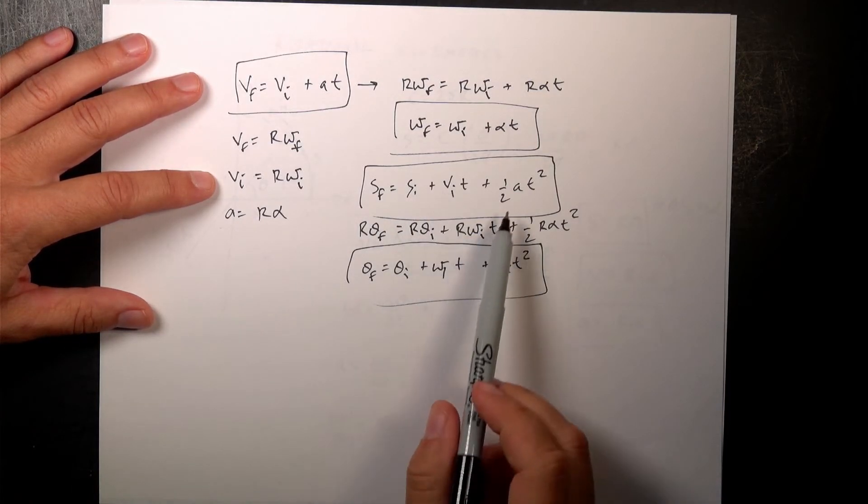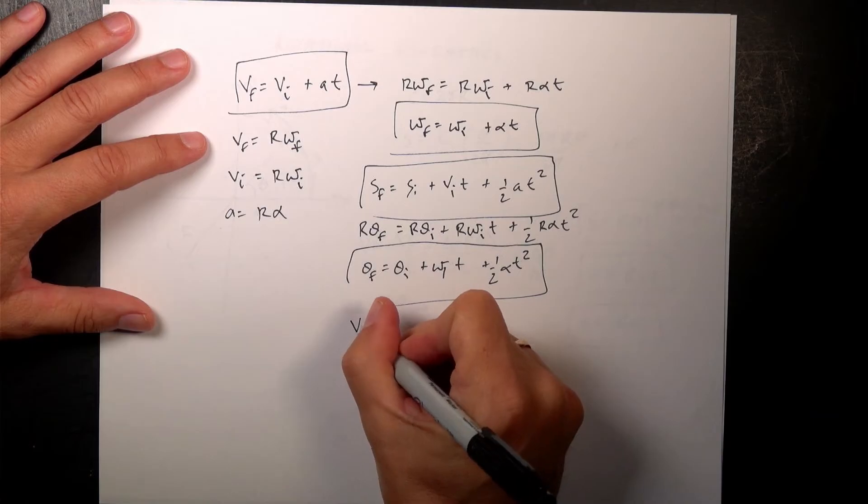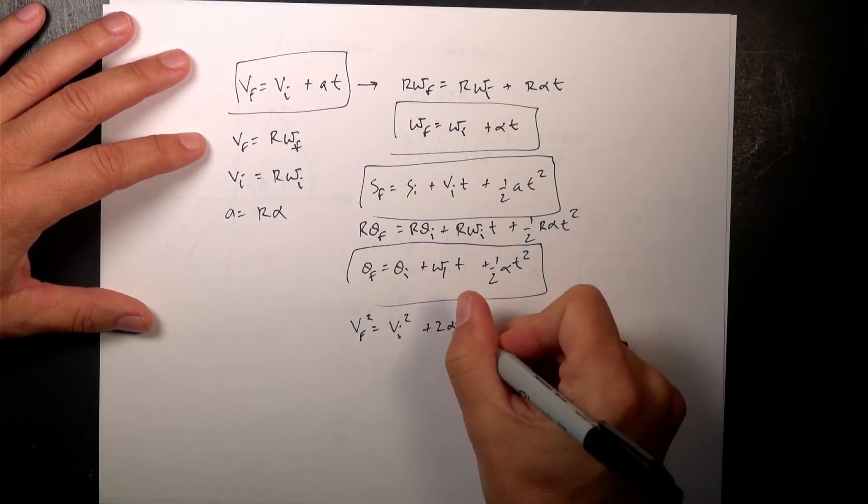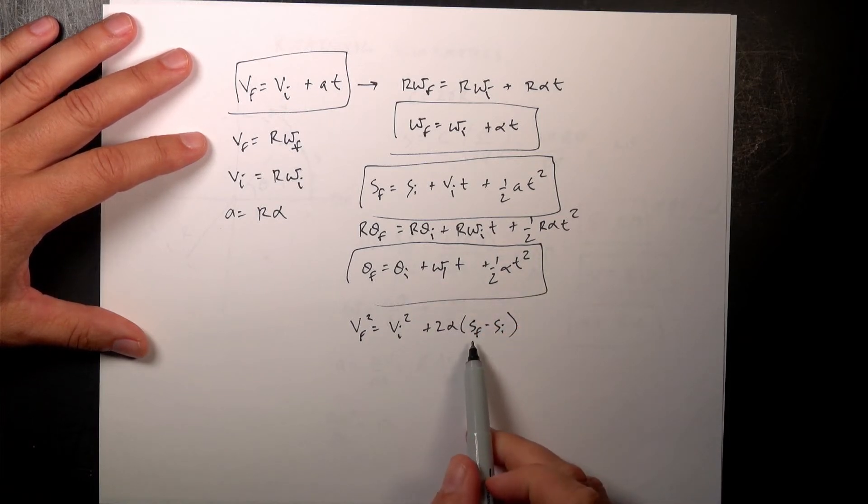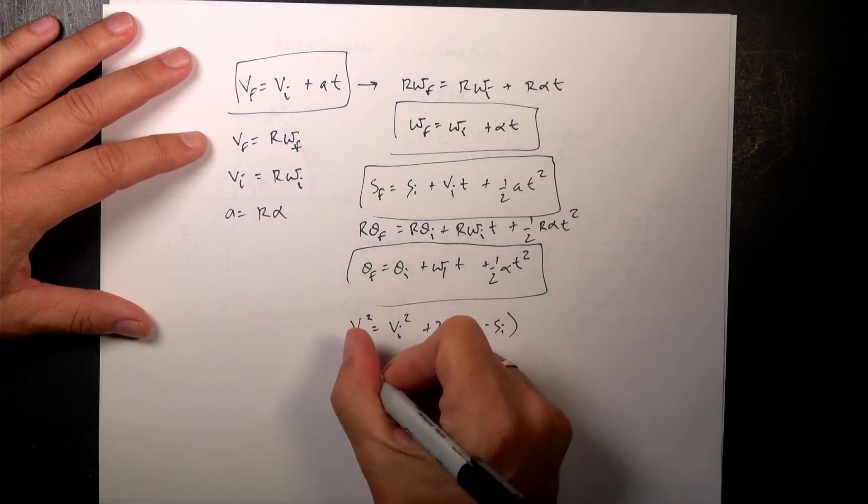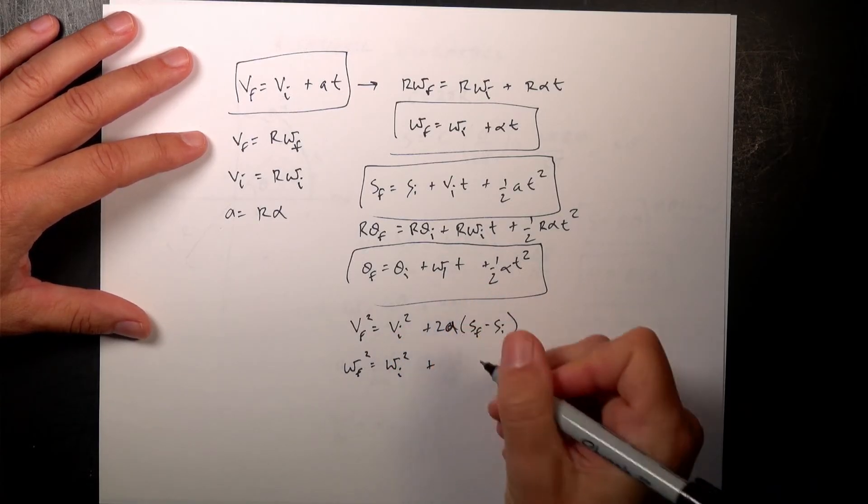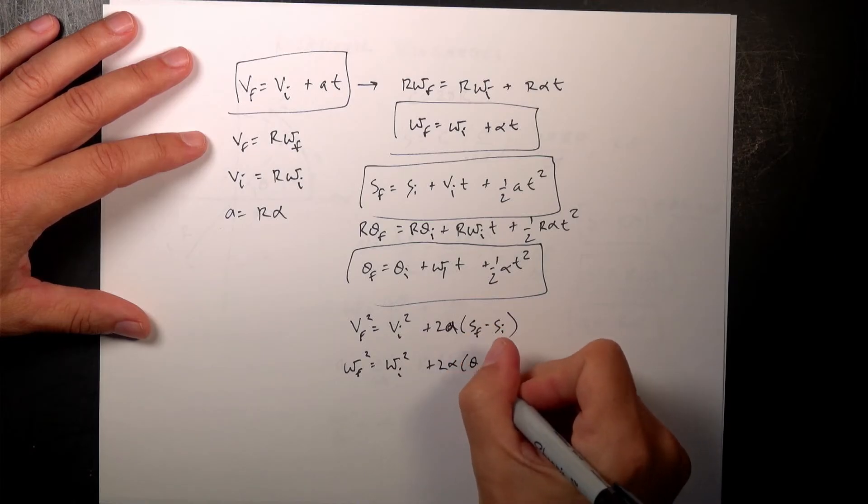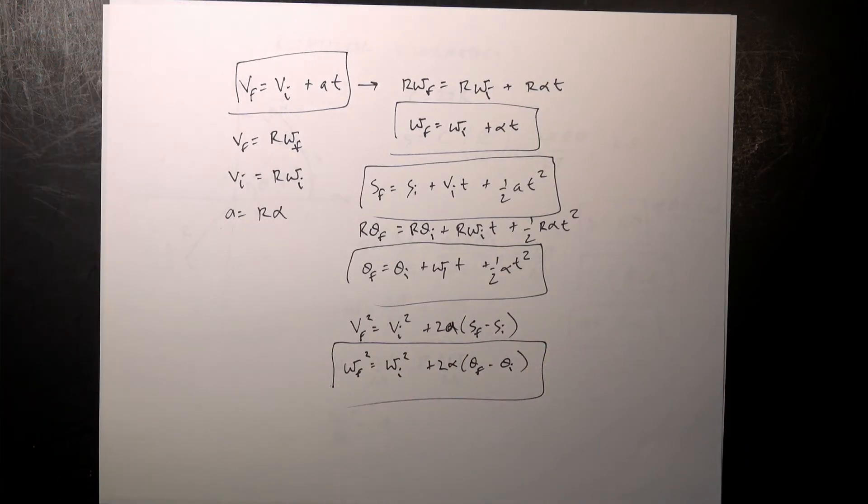Instead of velocity, I have angular velocity. Instead of acceleration, I have angular acceleration. And then we can do the same thing for the last equation. We have v final squared equals v initial squared plus 2 a s final minus s initial. Yeah, I'm using s because I don't want to say x or y because I said we're moving away from that. This becomes omega final squared equals omega initial squared plus 2 alpha theta final minus theta initial. And so there's your kinematic equations for rotational motion. So the same ideas that apply work here.